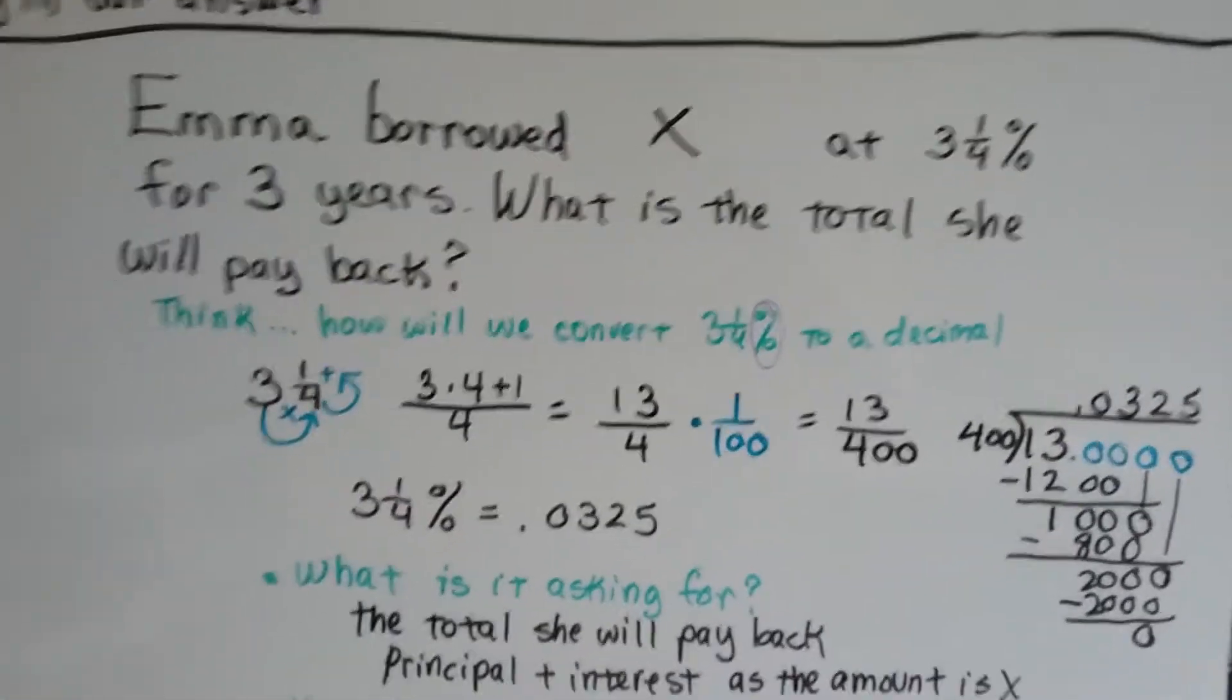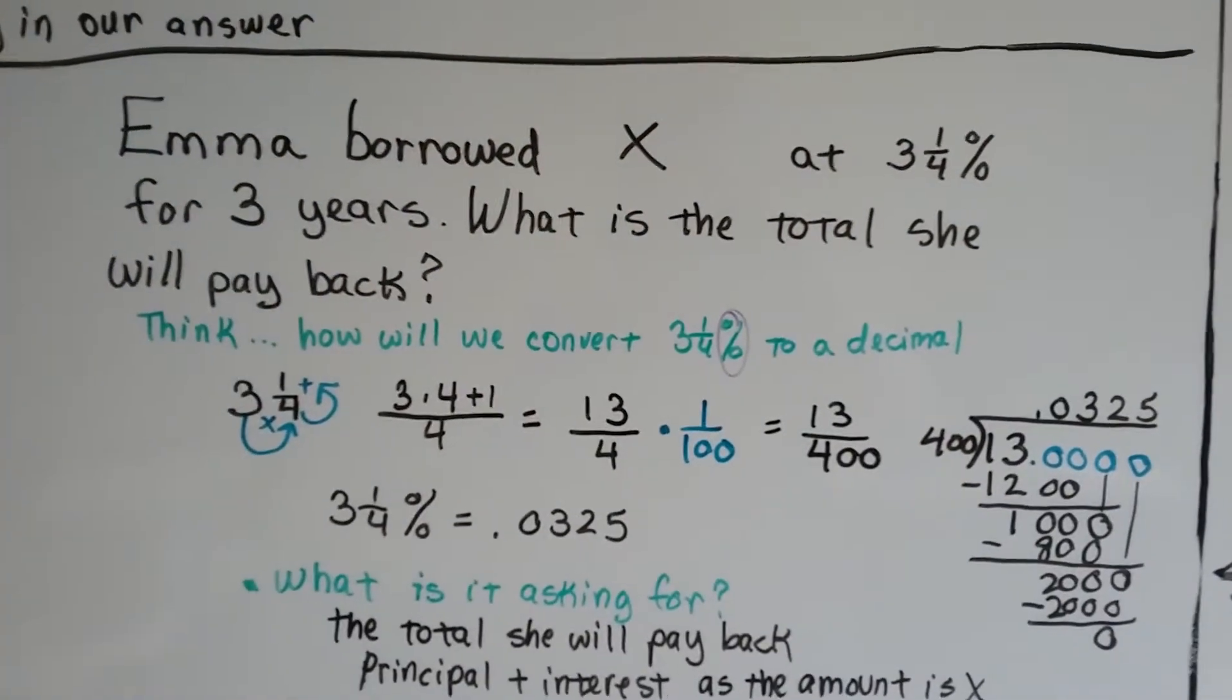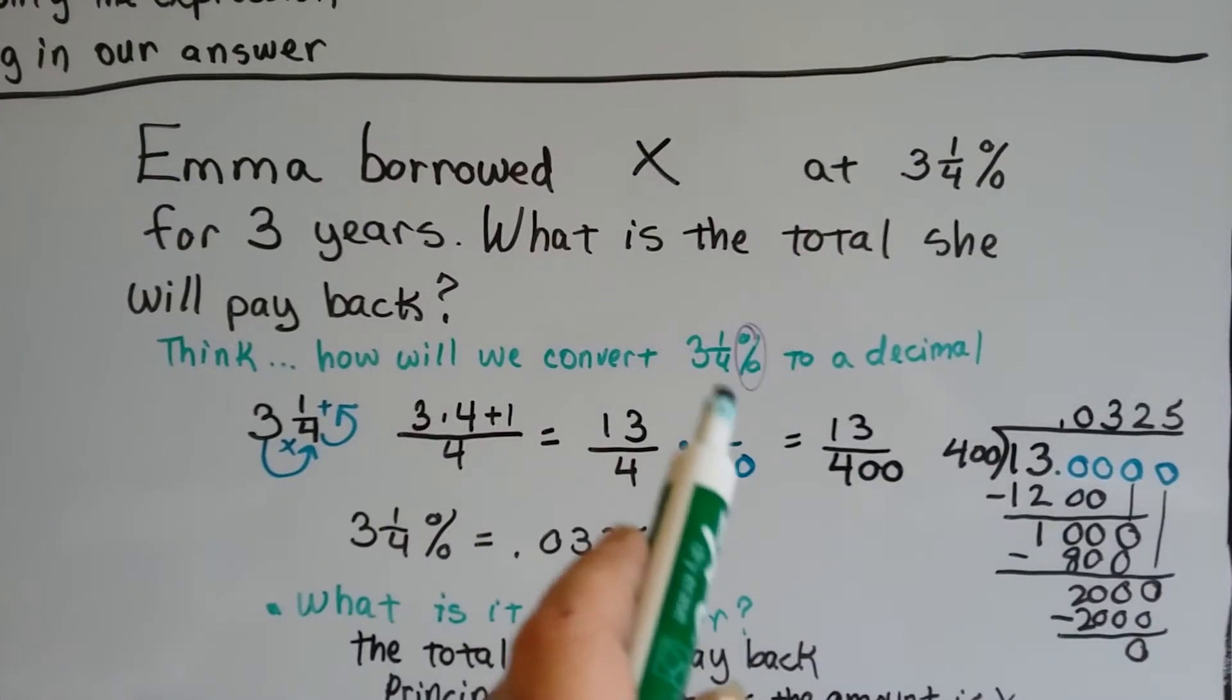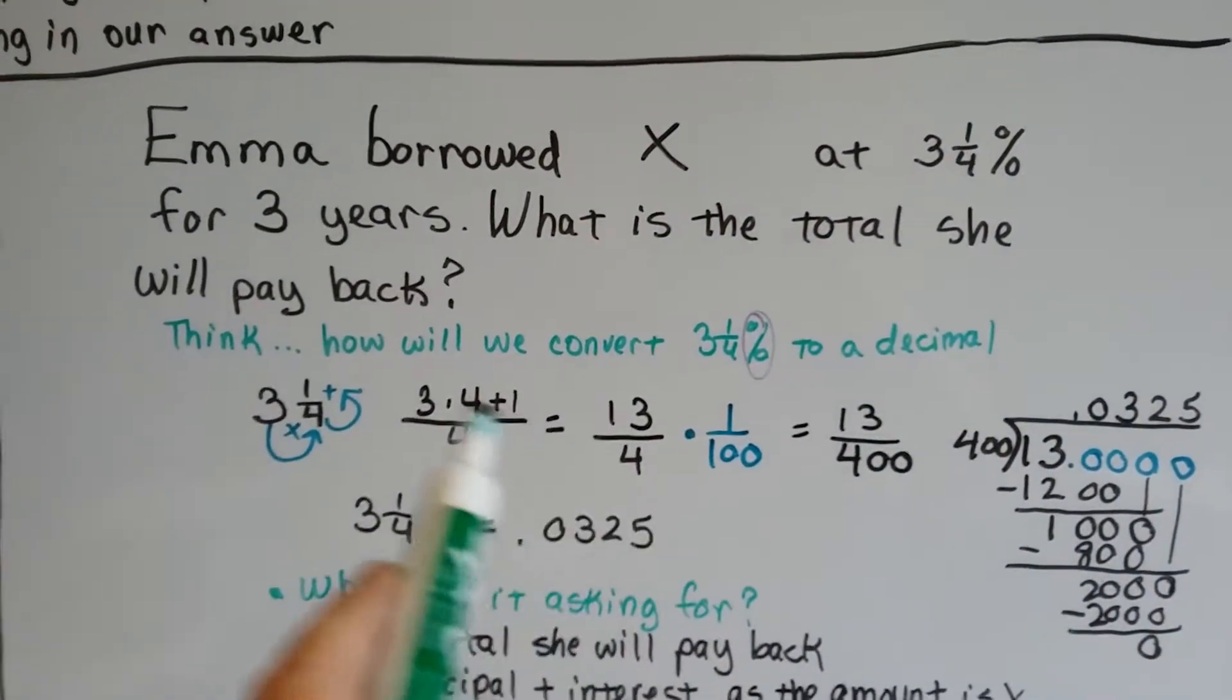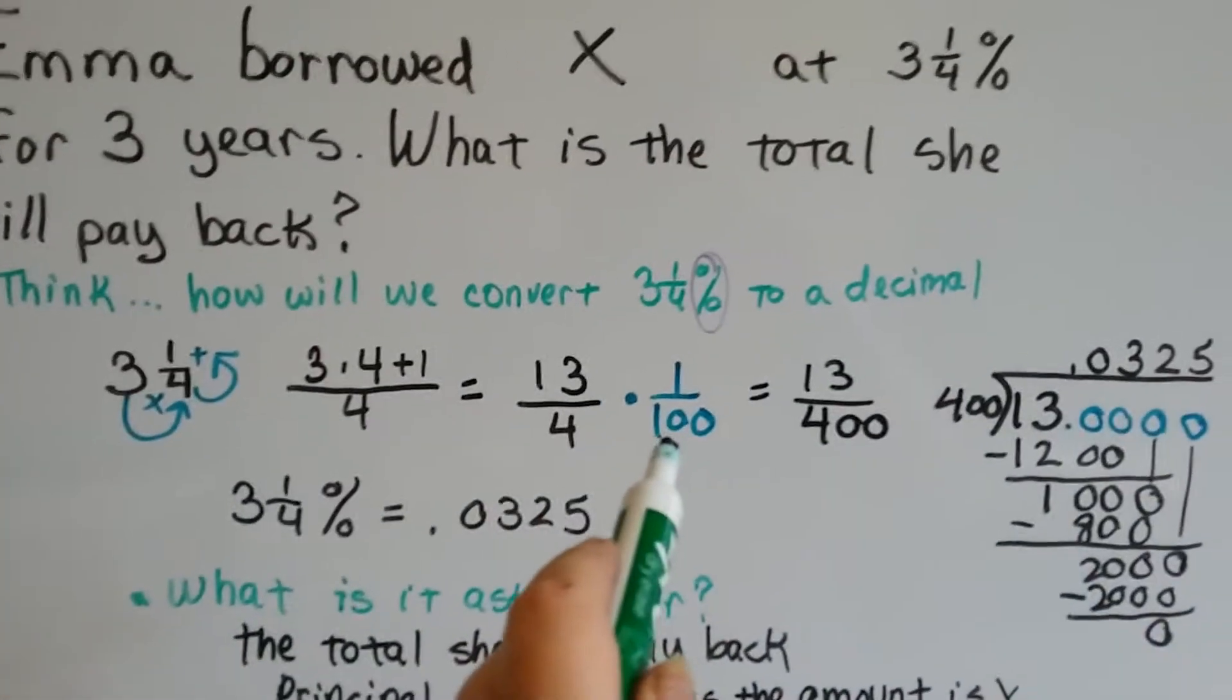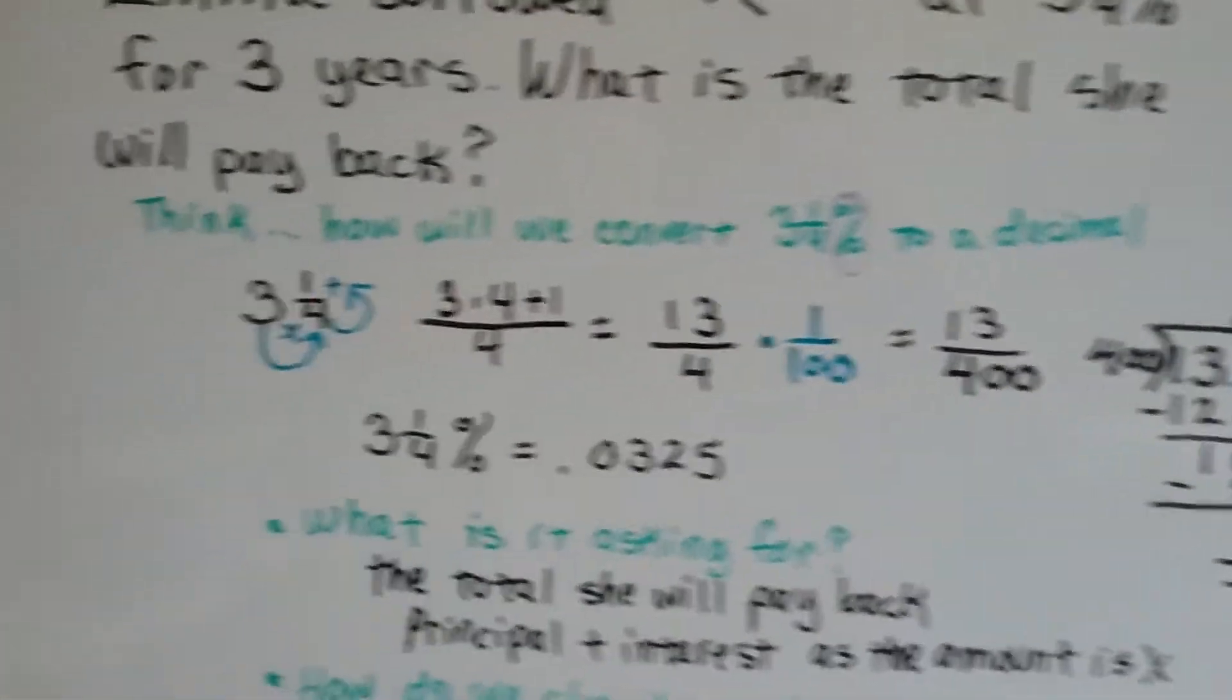Emma borrowed X at 3¼% for three years. What is the total she will pay back? So think. We need to convert the 3¼% to a decimal, just like we did in the other ones. We make an improper fraction, multiply it by 1 over 100, and then divide it. Three parts.